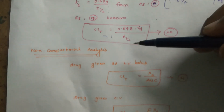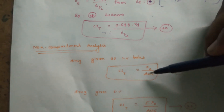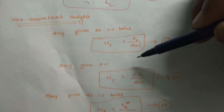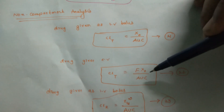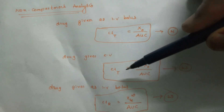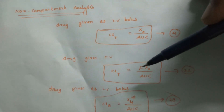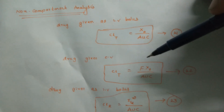We can also estimate total clearance by non-compartmental analysis. If the drug is given as an IV bolus, total clearance equals X₀ / AUC. If the drug is given extravascularly, total clearance equals F × X₀ / AUC, where F is systemic bioavailability. For an IV bolus, renal clearance equals the amount of drug excreted in urine at infinity divided by AUC.